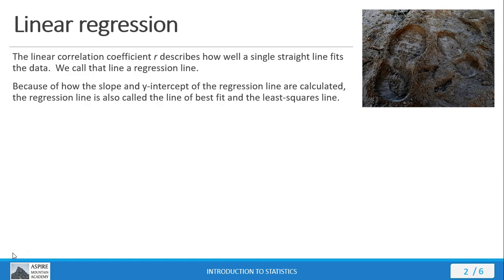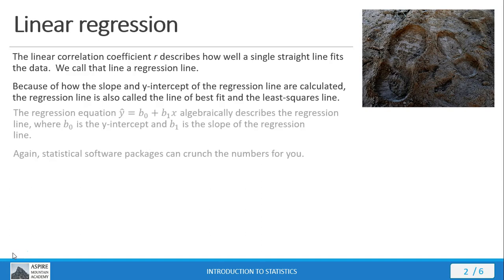Linear regression is all about finding the mathematical equation that describes this line of best fit. Now the general form of that equation is what you see here: Y hat equals B0 plus B1 times X. In this equation, B0 is the y-intercept and B1 is the slope of the regression line. And yes, statistical software packages like StatCrunch can do the heavy lifting in calculating these values for you.